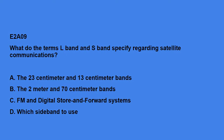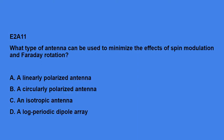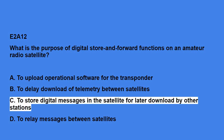E2A09: What do the terms L-band and S-band specify regarding satellite communications? The 23-centimeter and 13-centimeter bands. E2A10: What type of satellite appears to stay in one position in the sky? That would be geostationary. E2A11: What type of antenna can be used to minimize the effects of spin modulation and Faraday rotation? A circularly polarized antenna. E2A12: What is the purpose of digital store and forward functions on an amateur radio satellite? To store digital messages in the satellite for later download by other stations.